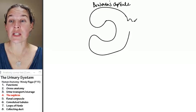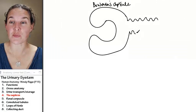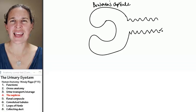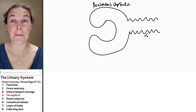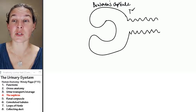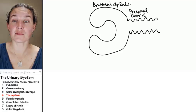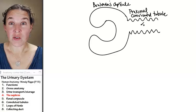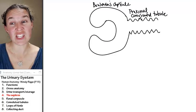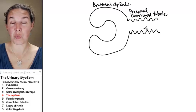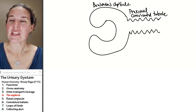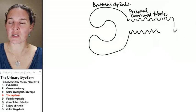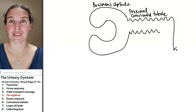There is a portion immediately connected to Bowman's capsule. There is a super convoluted part of the tubule called the proximal convoluted tubule. We're going to talk about the histological characteristics of each of these parts of the nephron.